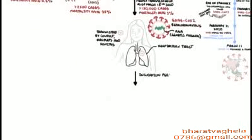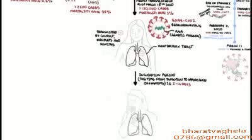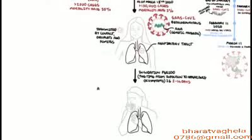The incubation period, the time from infection to appearance of symptoms, is about 2 to 14 days. The average age affected is 47 years old, and interestingly, children are rarely symptomatic. Both males and females are affected roughly equally.